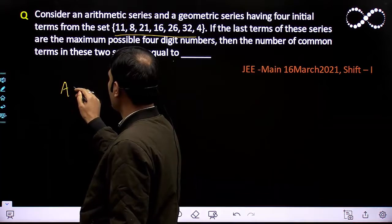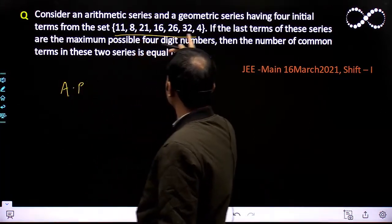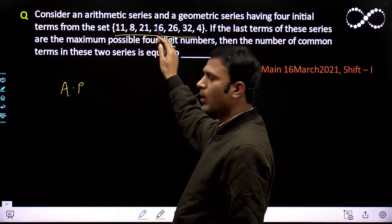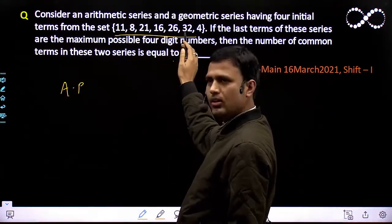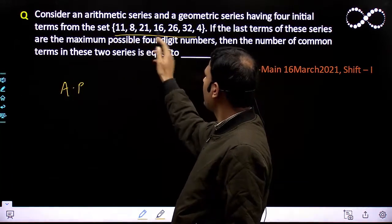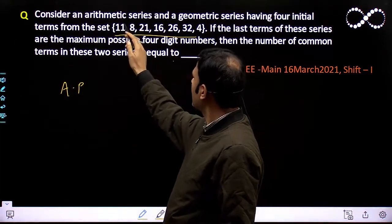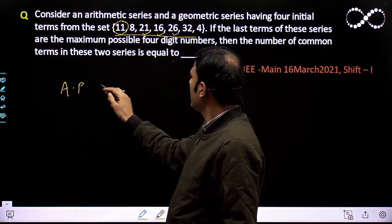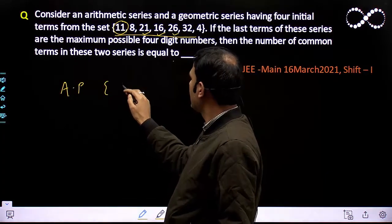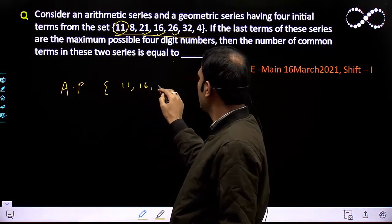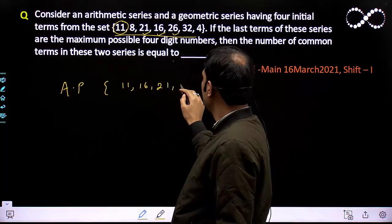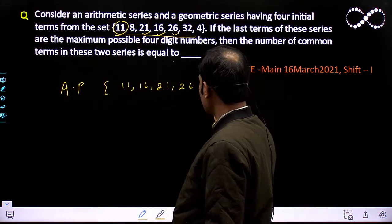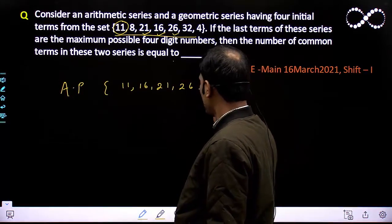In AP, if you take any number from this set, suppose 4, 8, then 12 should come, but 12 is not there. After 8, if we have 8, 11, 14 is not there. So let's start from here: 11, 16, 21, 26. This forms your AP series: 11, 16, 21, 26. So these are the AP terms, but it's going to continue.